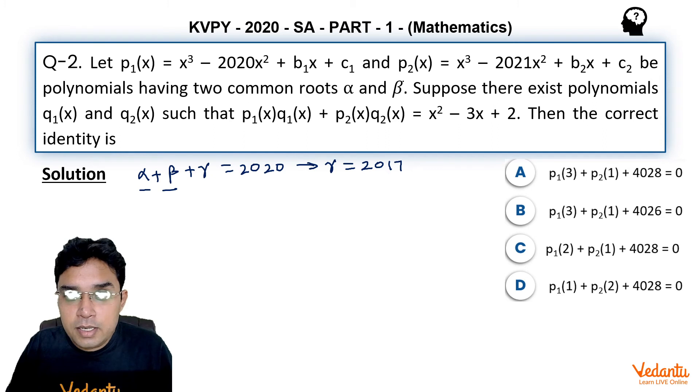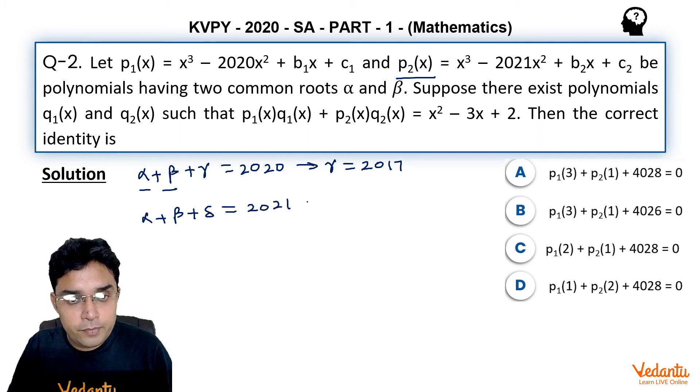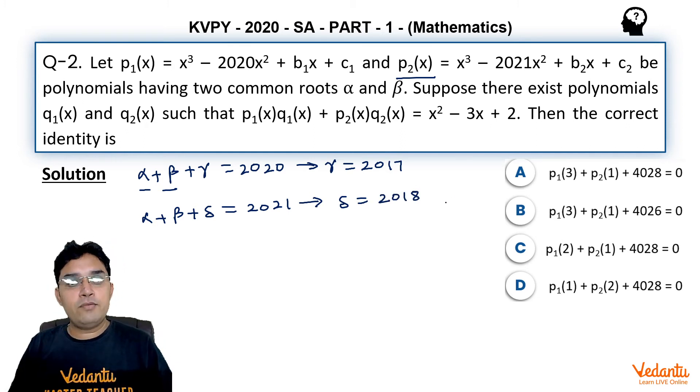Similar to this for p₂, their roots α + β + δ can be written as 2021. So this will give us δ to be equal to 2018 because α and β are 1 and 2.